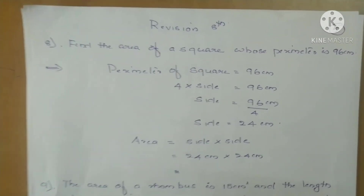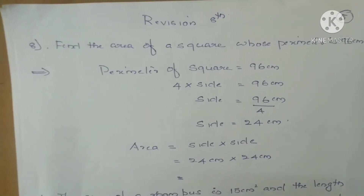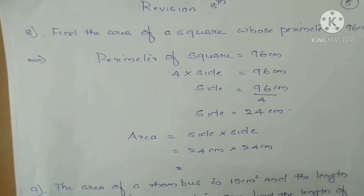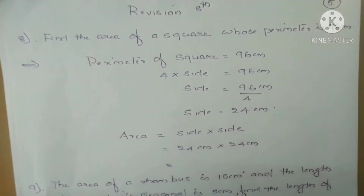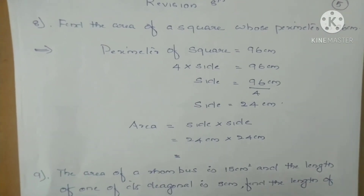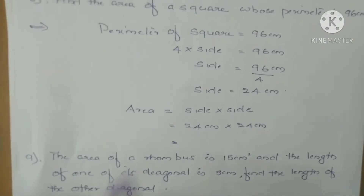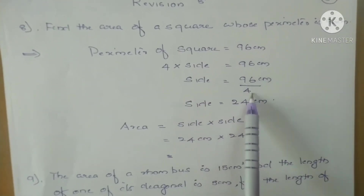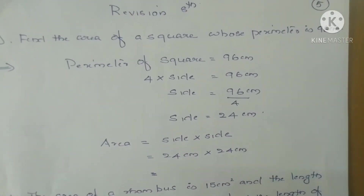Question 8: Find the area of a square whose perimeter is 96 centimeters. To find the area, we need the side measure. The side is not directly given, but we can find it using the perimeter. Perimeter of a square equals 4 into side. So 4 into side equals 96 centimeters, which means side equals 96 divided by 4, giving side equal to 24 centimeters.